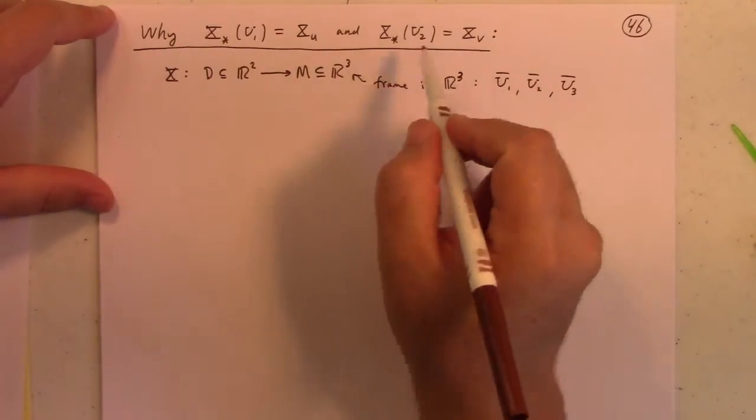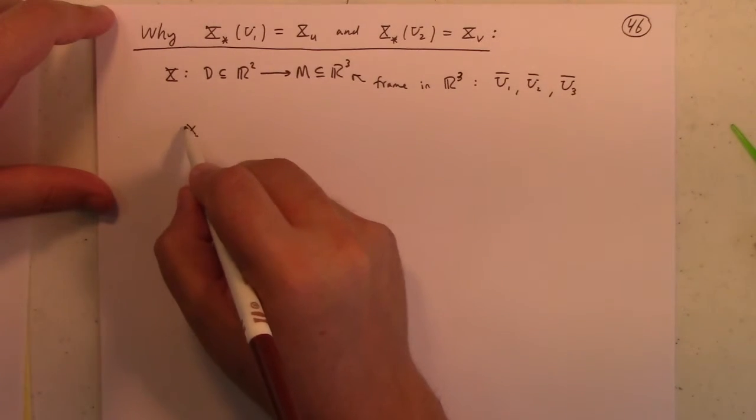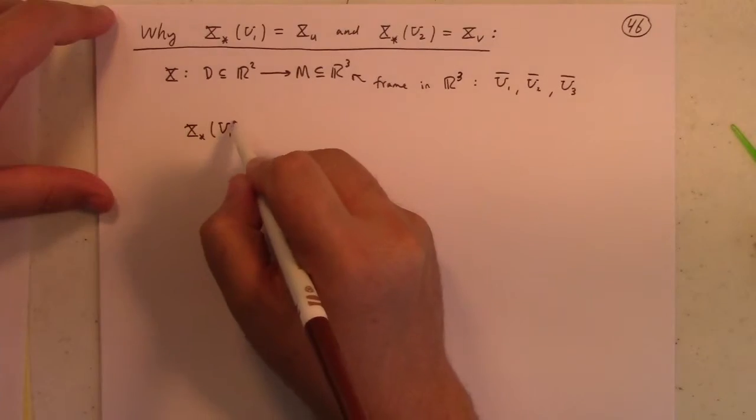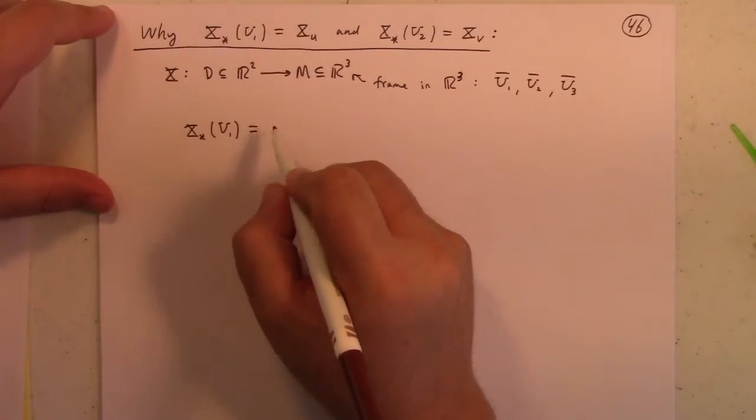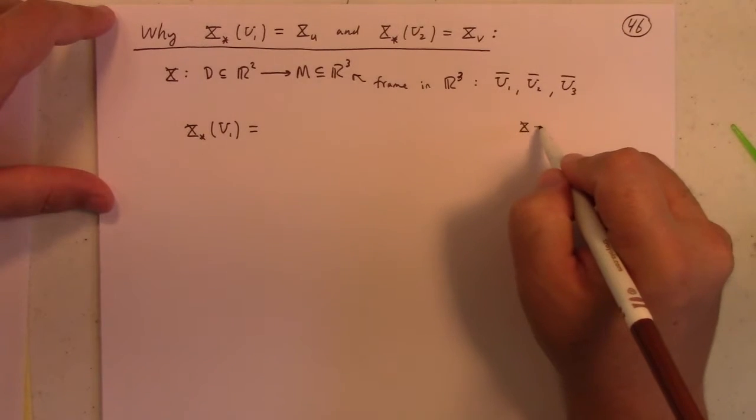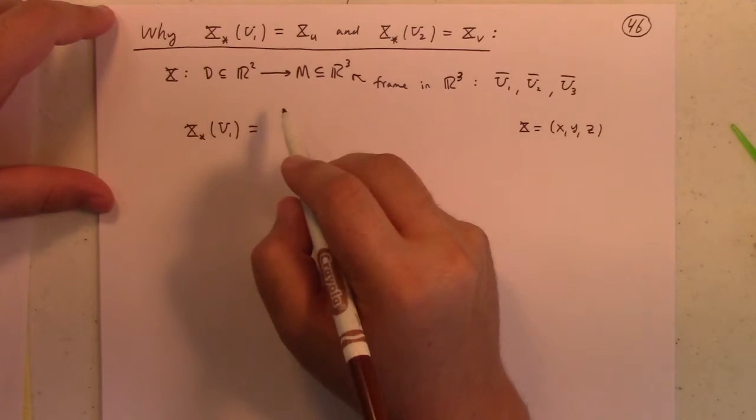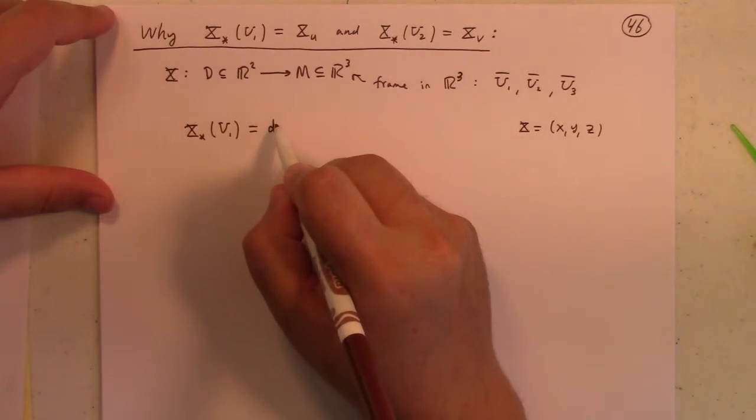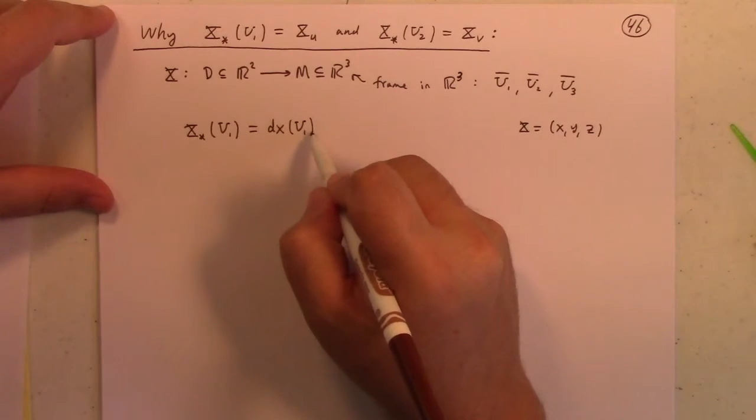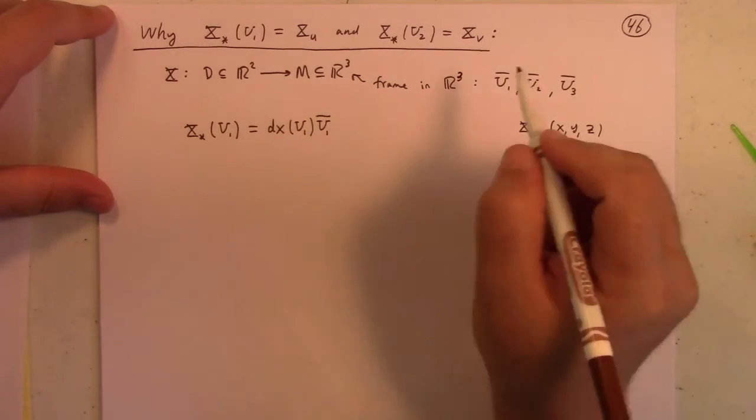So one way you can understand why these formulas are true, if I look at the push forward under X of U1, so that would be, what would that be? Well, X, remember, is XYZ. So the definition of push forward was DX acting on the vector U1 and then in the U1 direction,